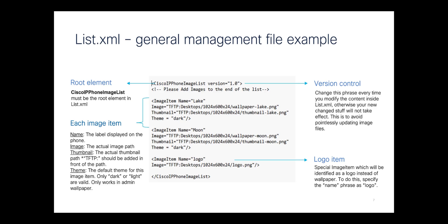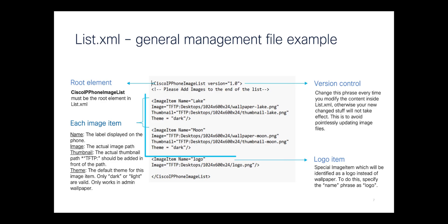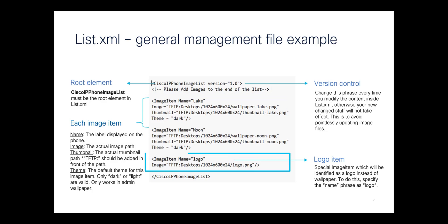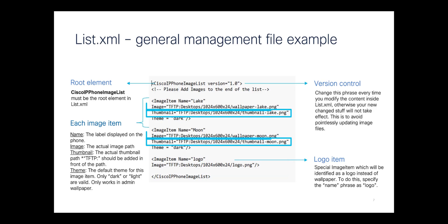This is the structure of the list.xml. At the top is the version control. In the middle, we have two custom wallpapers. And then at the bottom, we have the optional logo. Note that the thumbnail and the wallpaper are two different strings and they are required.